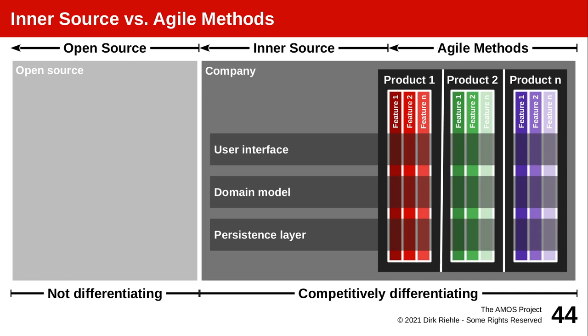Going one step further outside the company you meet open source projects. The decision of what goes where is simple: agile methods cover functionality specific to your project; inner source covers functionality specific to your company that is competitively differentiating. As soon as code or functionality is no longer competitively differentiating, it should be open sourced and leave the company.